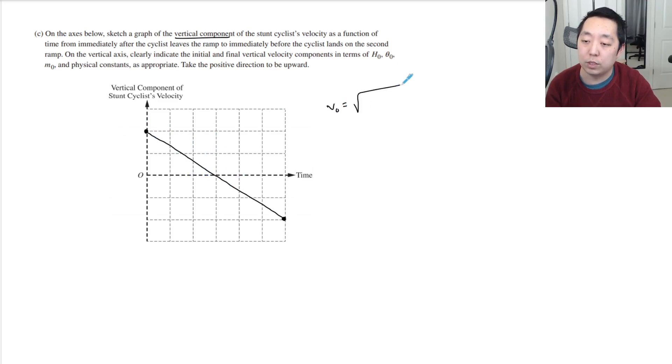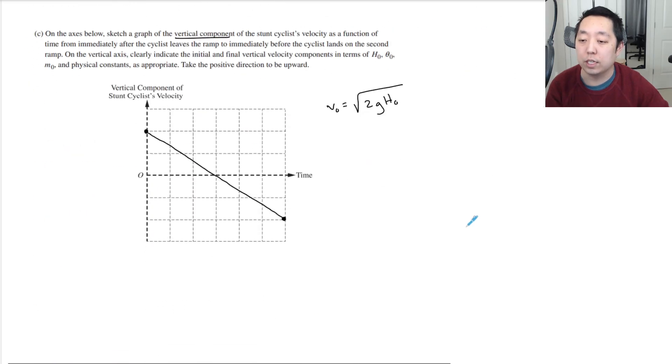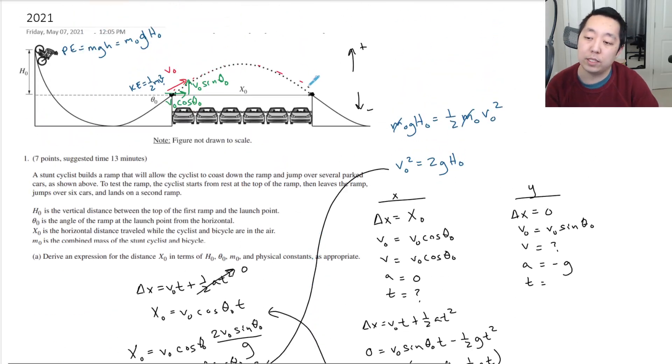And so this is the V 0. And we said V 0 was square root of 2 G H 0. So you've got to take the square root of that. So this is square root of 2 G H 0 on the vertical axis. And the initial and final vertical components leaves the ramp immediately before it lands on the second ramp. And so here's negative square root of 2 G H 0. The reason it's symmetric like this, by the way, there's a couple ways to think about the velocity being the same, but just downward in this direction.